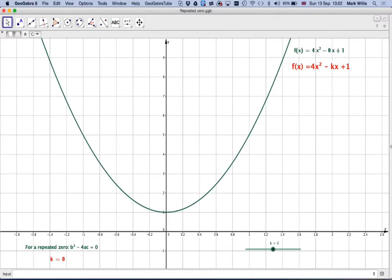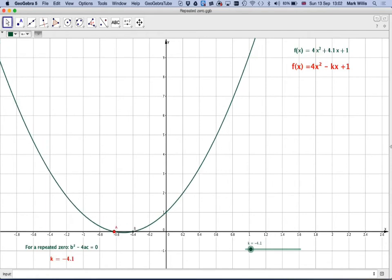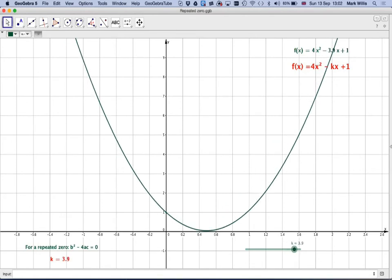We want to know where we get one root, so if we slide it back to minus 4 where we just calculated, k is minus 4. We can see we get one root there. And then if we slide it along to here, at 4, we get another root here.